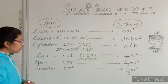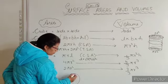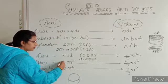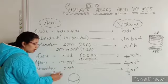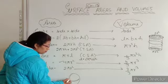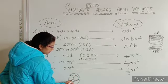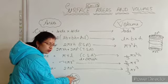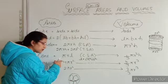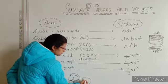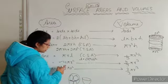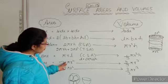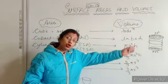For a sphere, the surface area is 4 pi R squared — that means equal to the area of 4 circles. For a hemisphere, the curved surface area is half of the sphere, so 2 pi R squared. And the volume of a sphere is 4/3 pi R cubed, so hemisphere is half of that.